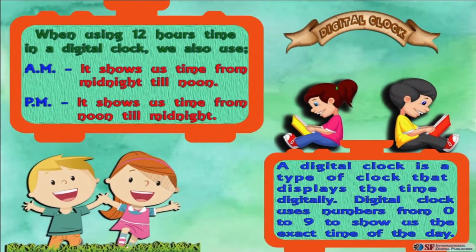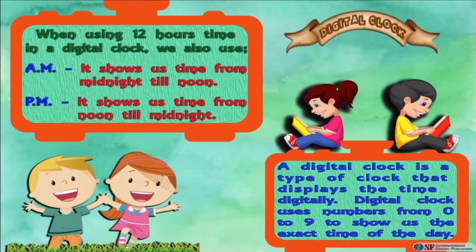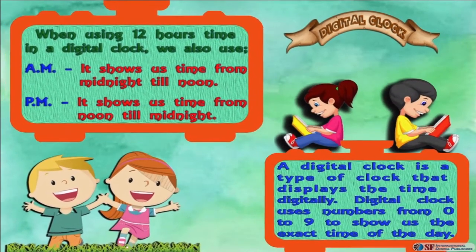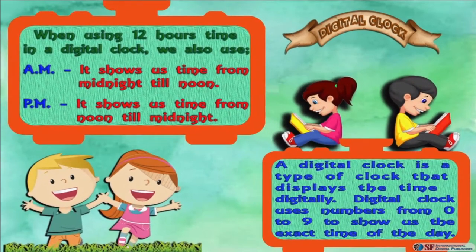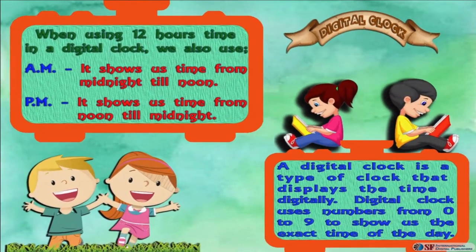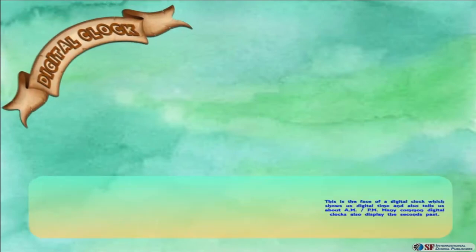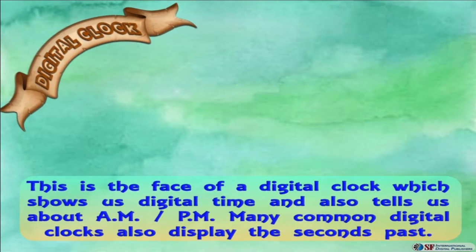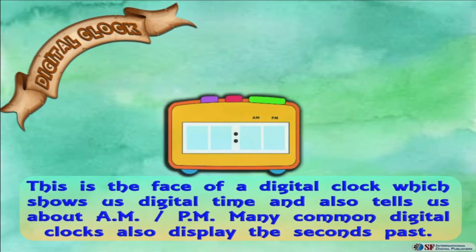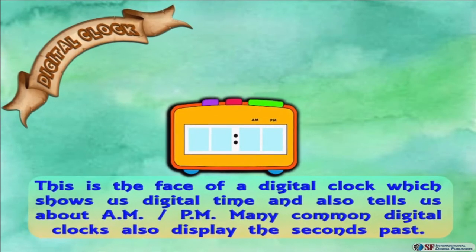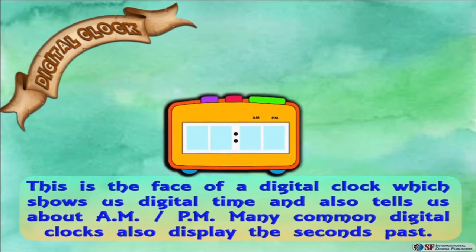When using 12-hour time on a digital clock, we also use A.M. and P.M. A.M. shows us time from midnight till noon. P.M. shows us time from noon till midnight.